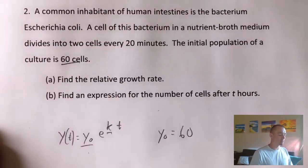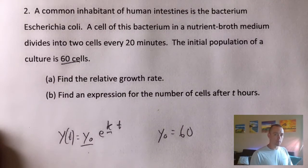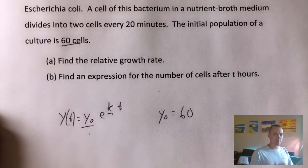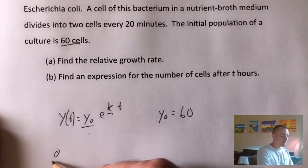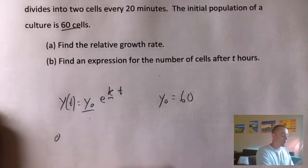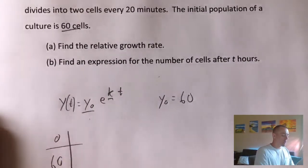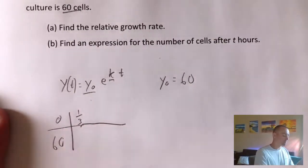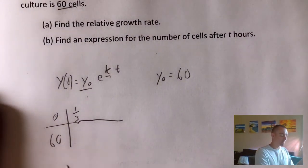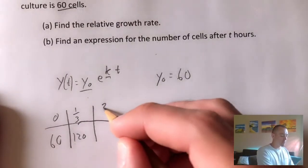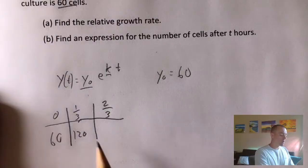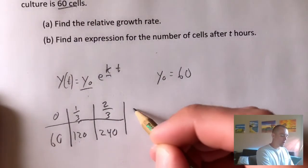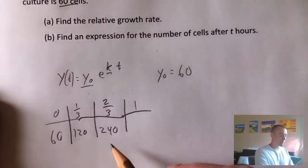So if we start with 60 cells, and it doubles every 20 minutes, what we want to do is figure out how many cells there are after an hour. So basically, we could just keep track. At time zero, zero minutes after we start measuring, we obviously have 60 cells. 20 minutes later, so basically a third of an hour later, we're going to double that. So 60 times two would be 120. After two thirds of an hour, which is 40 minutes, we would just double this. So that'll give us 240. And then at an hour, we're going to just double that to get 480.